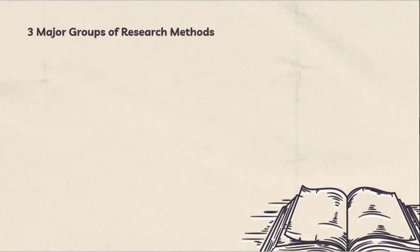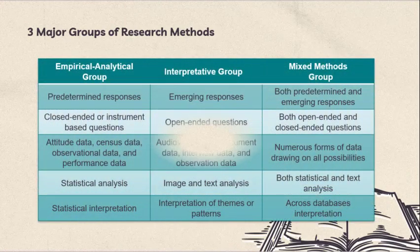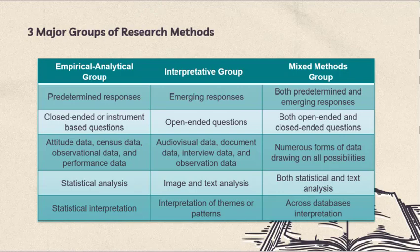First is the Empirical Analytical Group. This group concentrates on objective knowledge, closed-ended or instrument-based questions that can only be answered by predetermined responses such as yes or no, which can be found on a test or on a checklist, and operational definitions of the variables to be measured. The Empirical Analytical Group uses deductive reasoning and statistical analysis and interpretation on its data in order to come up with a conclusion.